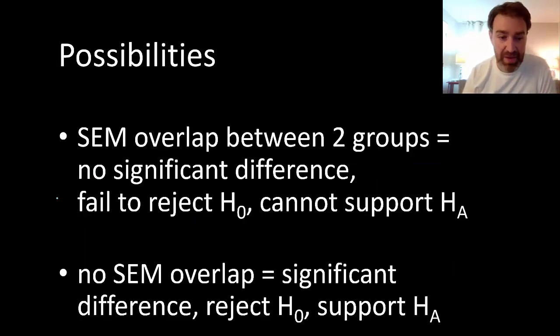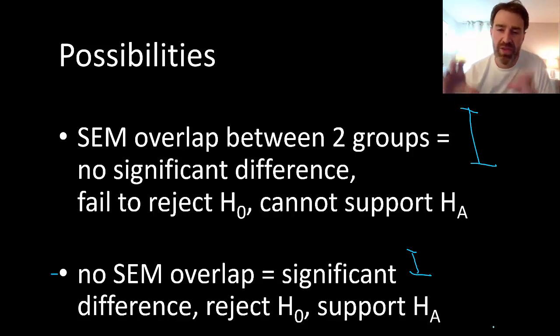The other possibility is that maybe if the SEM error bars don't overlap at all, maybe if my control group had been down here and my experimental group had been way up here, when there's no overlap, then maybe even if another set of control data was way up here and another set of experimental data was way down here, the experimental group is still higher than the control group. So what we're really showing is that when there is no overlap in the SEM error bars, there is a significant difference between your two groups, and maybe that can help you successfully reject your null hypothesis and support the alternate that you had.